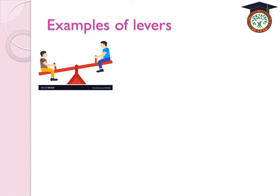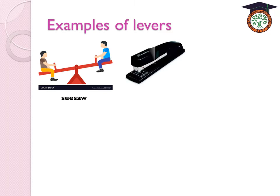Let's look at examples of levers. The seesaw is a lever because it has a rigid bar that rotates around a fixed point called the fulcrum, and is affected by an effort force and a resistance force. The stapler is also a lever because it has a rigid bar that rotates around the fixed point and is affected by effort force and resistance force.